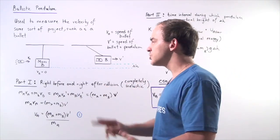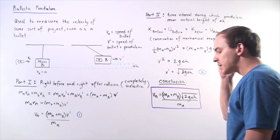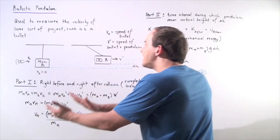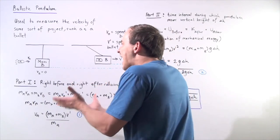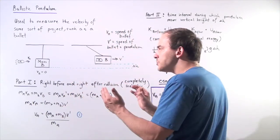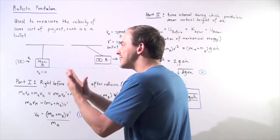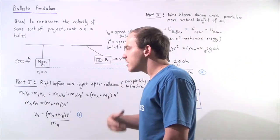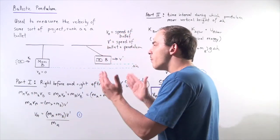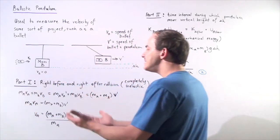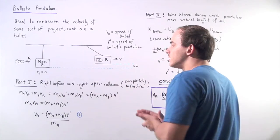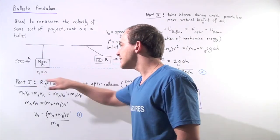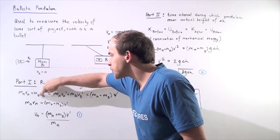Let's break this problem down into two steps: part one and part two. In part one, we're examining the moment right before and right after the collision takes place. Notice we have a collision in which the two objects completely stick together, so this is a completely inelastic collision. We can use conservation of momentum — the sum of the momentum of our two objects before they collide equals the sum after. Notice that the initial velocity vb of the block was zero, so that term cancels out.